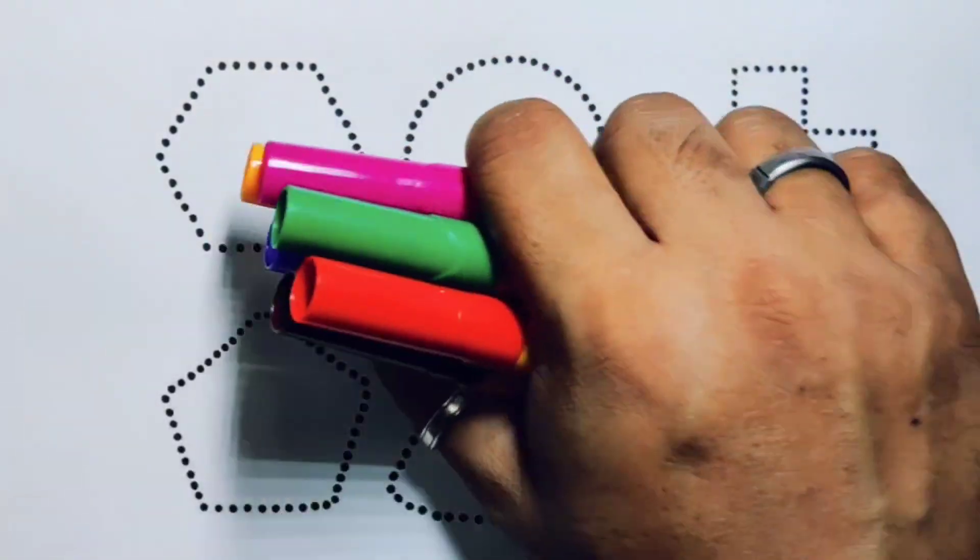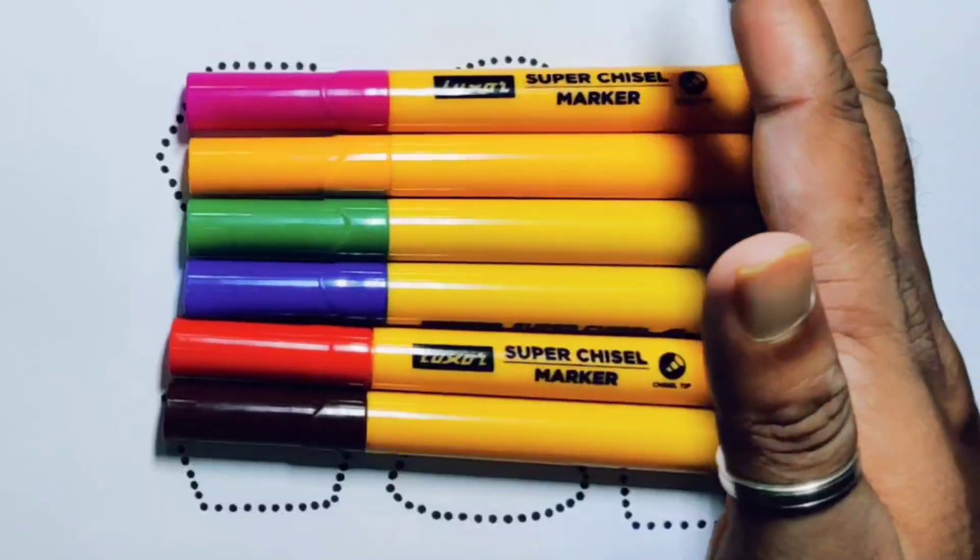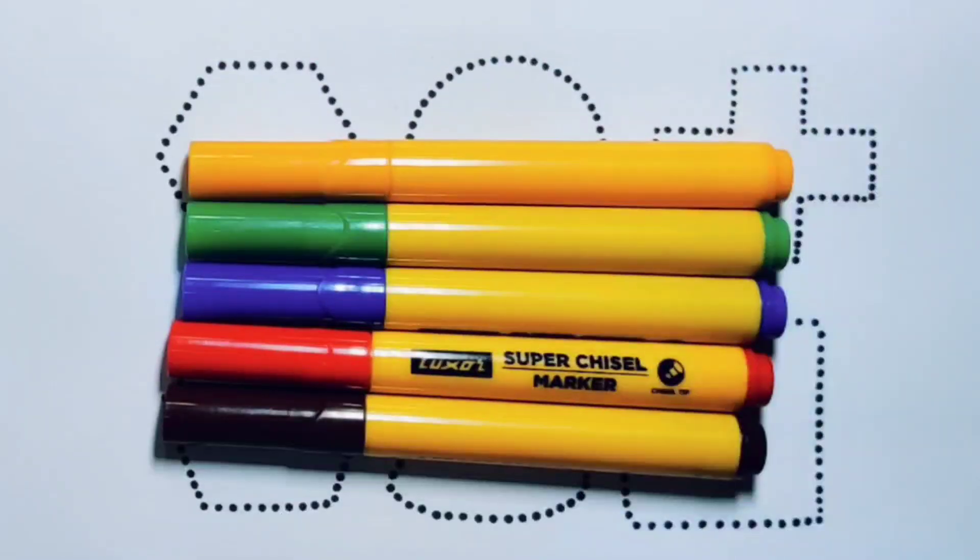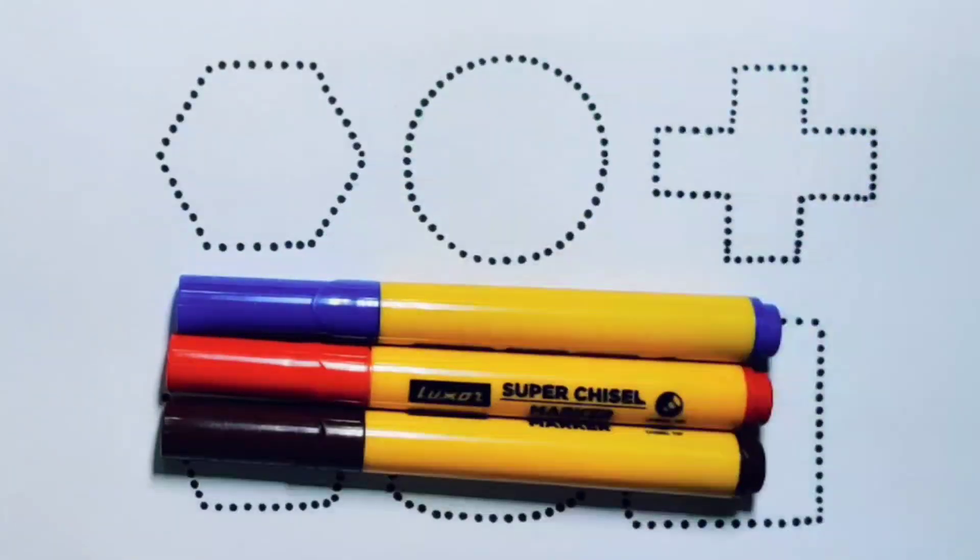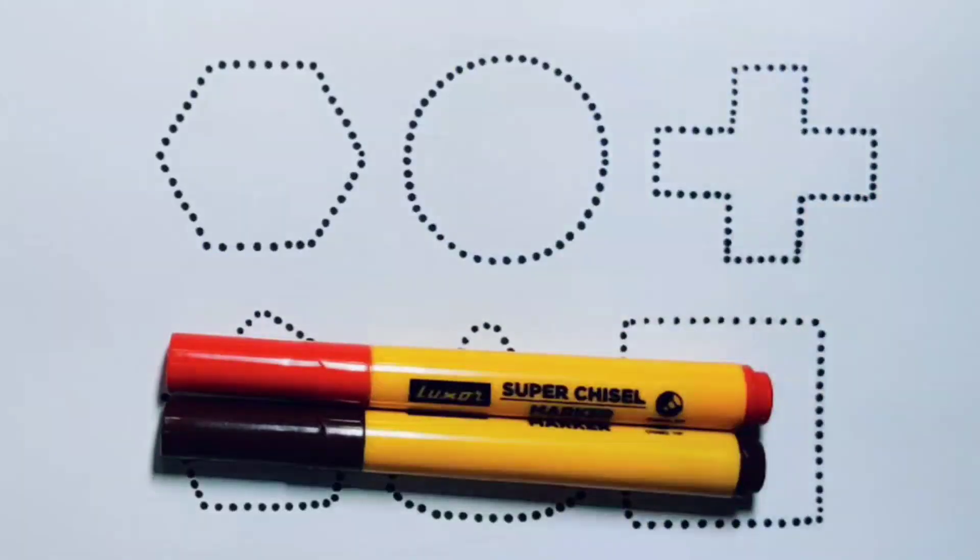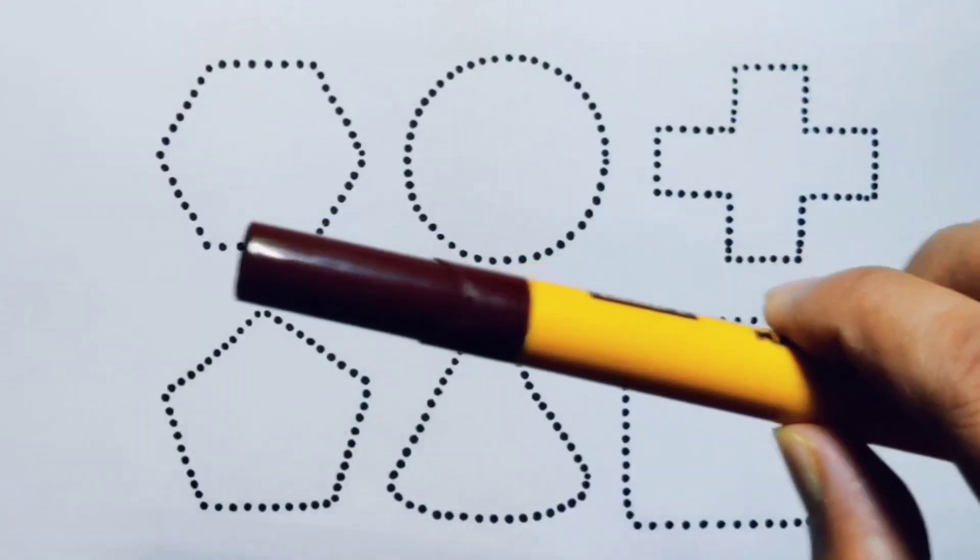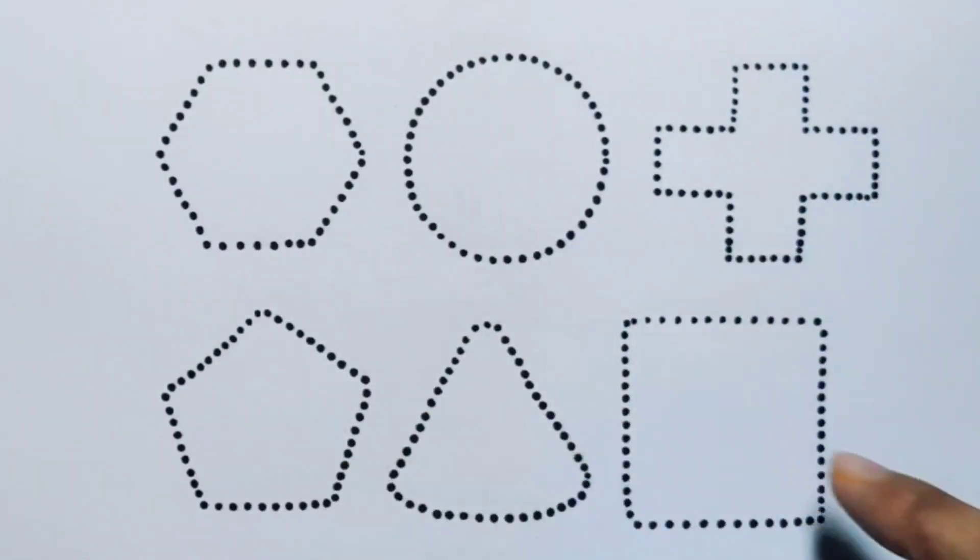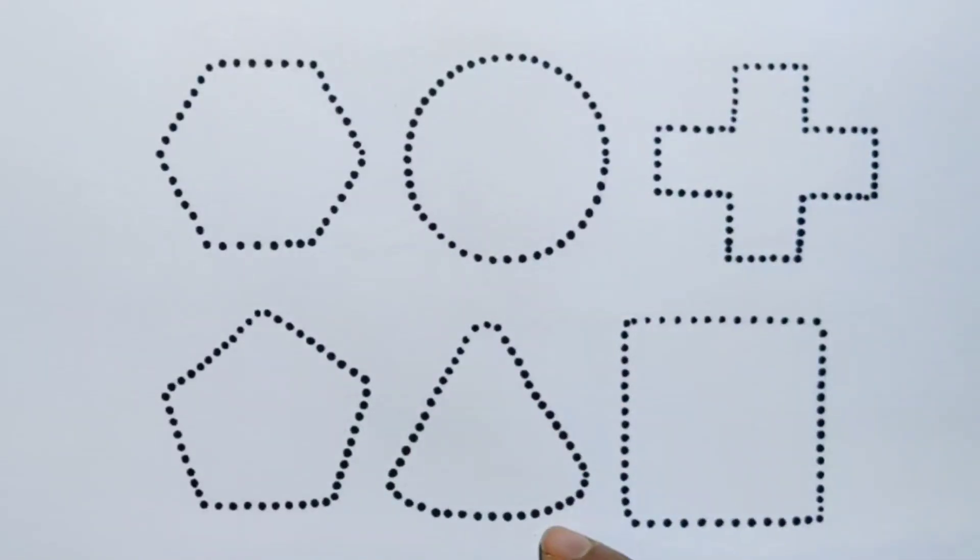Hello kids, welcome to my new video. First we're going to know the colors: pink color, orange color, green color, blue color, red color, chocolate color, and black color. Now let's learn the 2D shapes: hexagon, circle, cross, pentagon, triangle, and square.